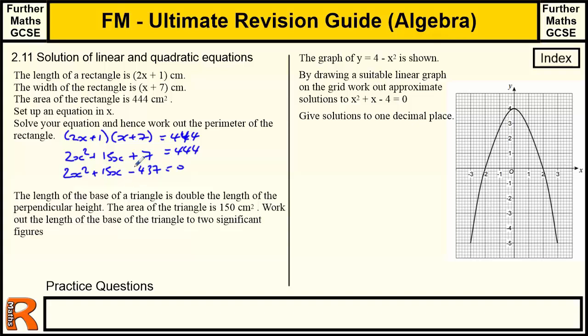I would guess, because this number is so high, that you would be allowed to use a calculator on this. And if you did, you use the formula, the minus b plus minus square root b squared minus 4ac over 2a formula, which you're given to work out that x would be equal to 23 over 2 or minus 19.